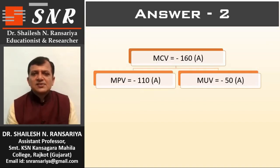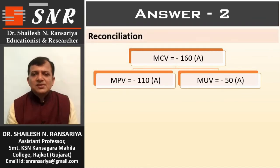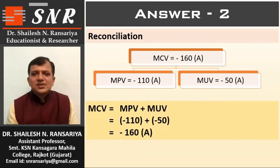See the reconciliation. MCV minus 160; MPV minus 110; and MUV minus 50. So, MPV plus MUV equals MCV.